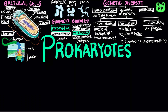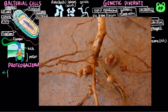Proteobacteria is a large and diverse clade of gram-negative bacteria that includes five subgroups. Alpha-proteobacteria includes the Rhizobium species that live in nodules within the roots of legumes, where the bacteria convert atmospheric nitrogen to compounds that the host plant can use to make proteins.